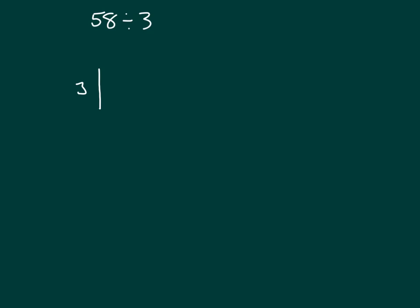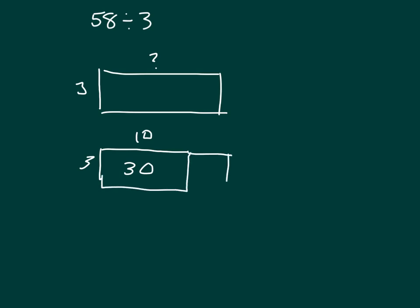So here's a 3. Here's what we don't know. And then let's start with the tens, where we look at those 5 tens and we're dividing by 3. We know we can actually get 10 there with the 3, so that we have 30 of the 58. What's remaining there? Well, we have 28 remaining.